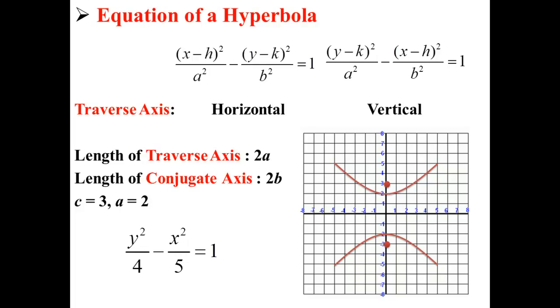Here for our hyperbola with a vertical axis and a center at (0, 0), we derive the equation (y - 0) squared over 4 minus (x - 0) squared over 5 is equal to 1. And now we have the equation of our hyperbola in standard form.